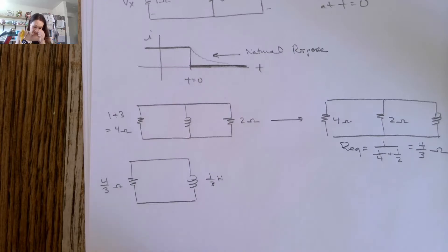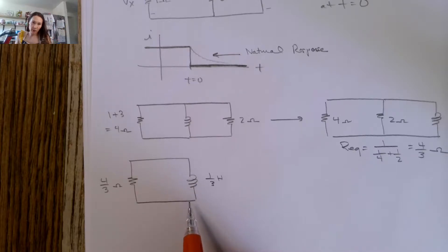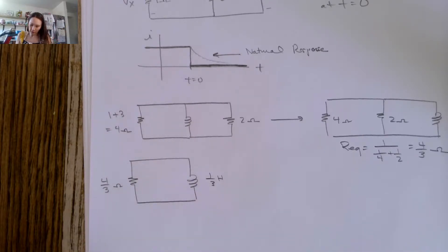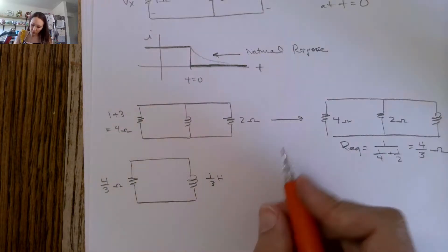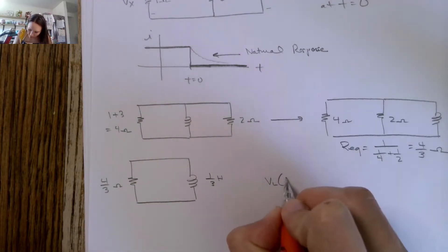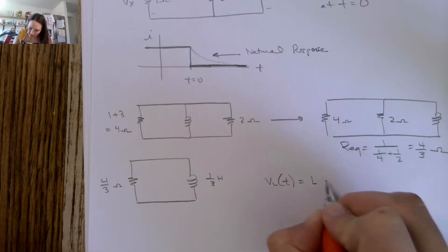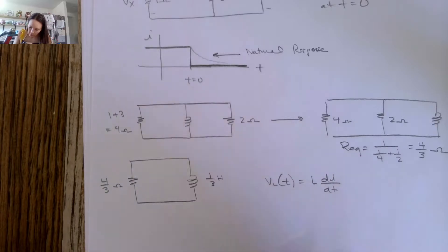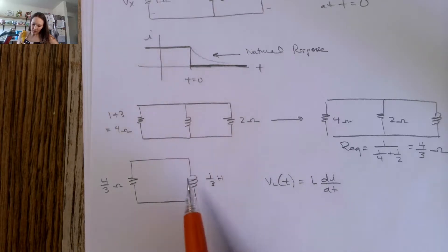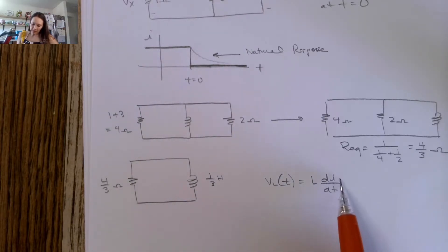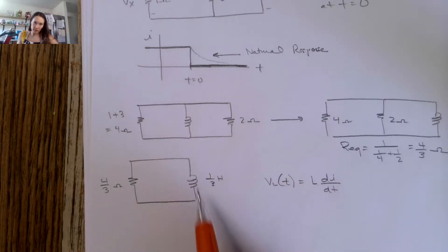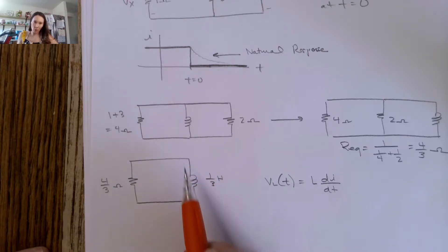Now we have a source-free RL circuit. Initially this thing is charged up, so it's going to have a current stored on it but no voltage. The equation for voltage across an inductor is L times dI/dt. If we don't have a change in current, the derivative term is zero, so we can have current stored but no voltage. If the current is constant, the derivative is zero. So in a way, it almost looks like a wire — if there's no voltage drop across it, it looks like a wire.